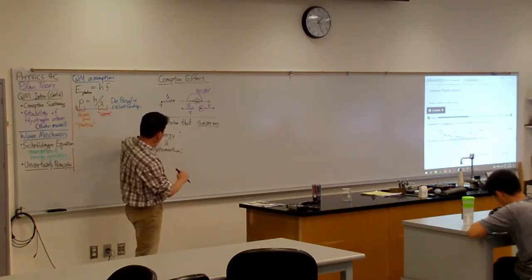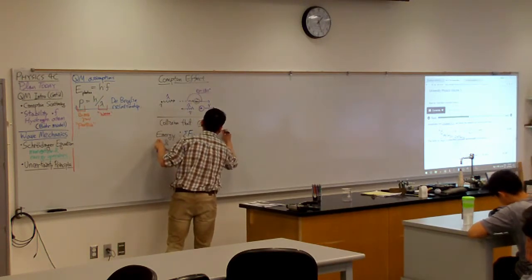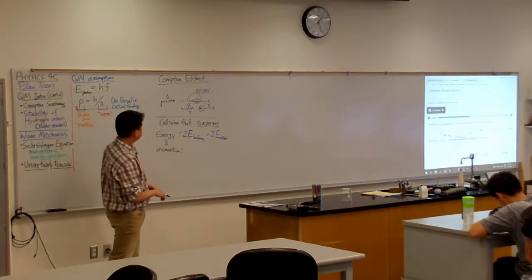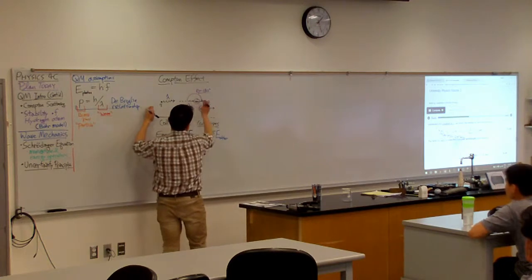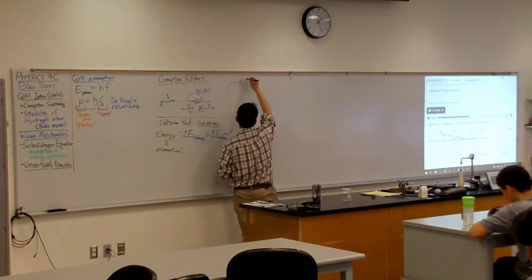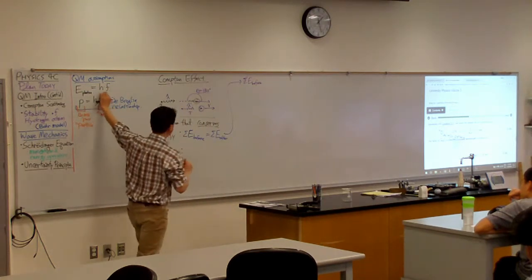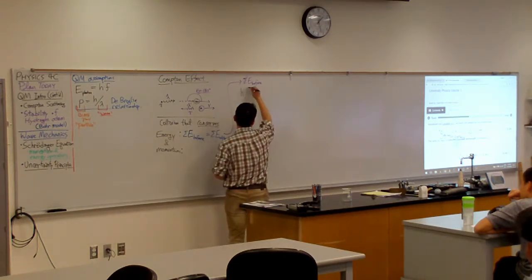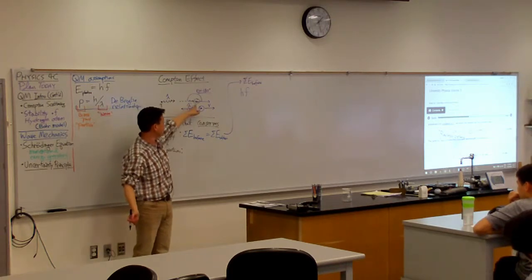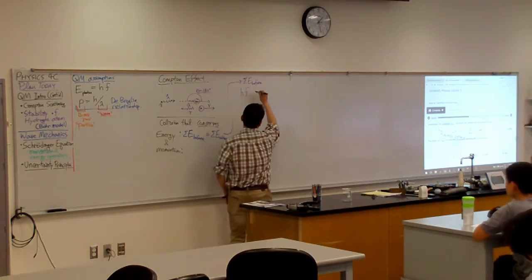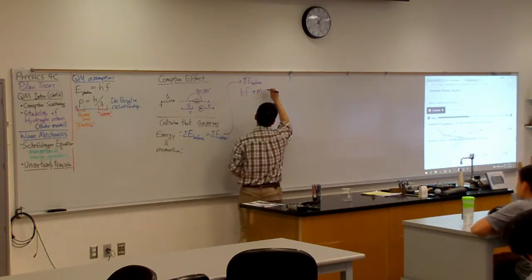For conservation of energy: total energy before collision equals total energy after collision. In this picture, the total energy before collision includes the energy of the photon plus the rest energy of whatever particle that is — most usually an electron. So it's the energy of the photon plus mc squared, the rest energy. That's equal to the total energy after.